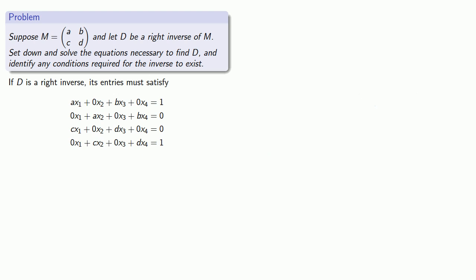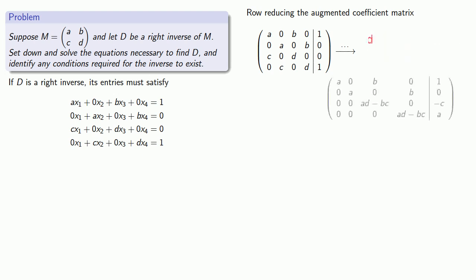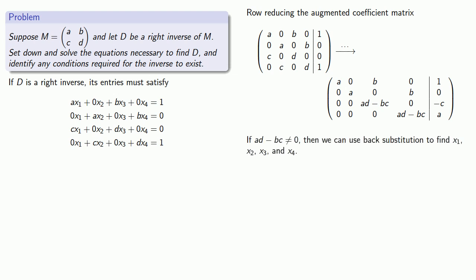So now we can row reduce the augmented coefficient matrix. As long as our leading coefficients are not equal to zero, we'll be able to use back substitution. And so as long as AD minus BC is not equal to zero, we can use back substitution to find our values x1 through x4. Therefore, our system will have a solution provided AD minus BC is not equal to zero.